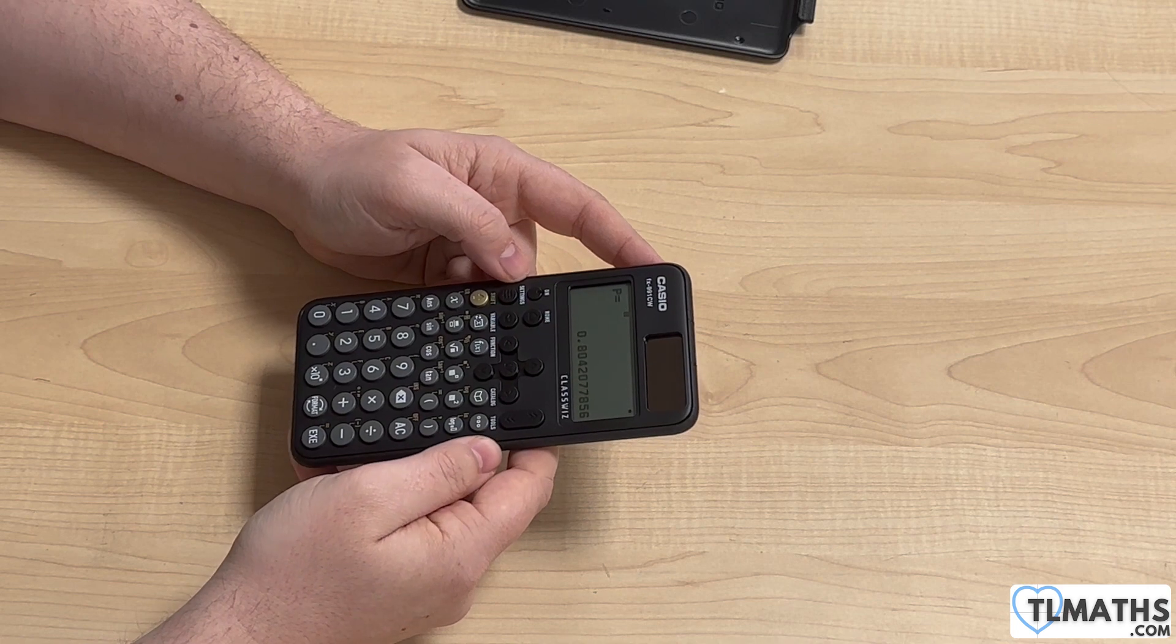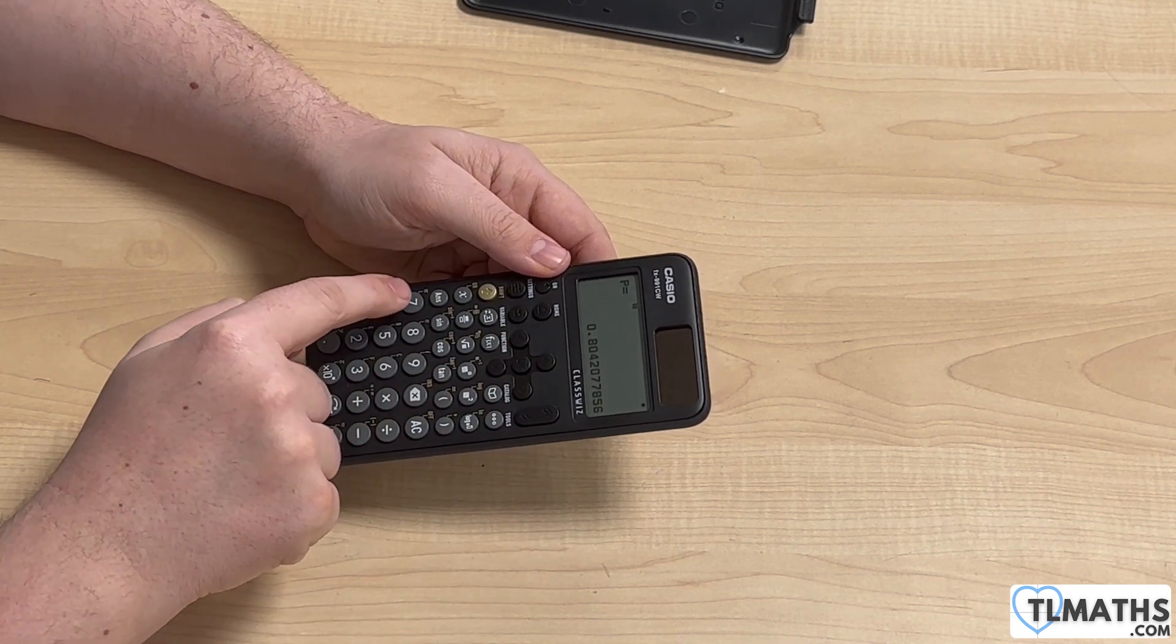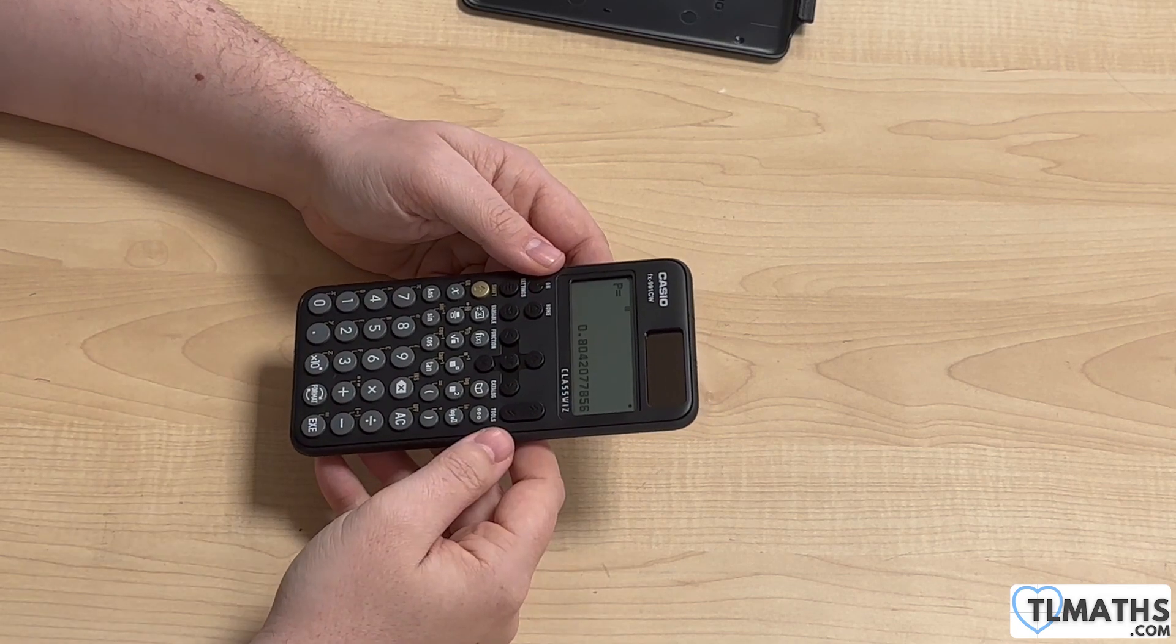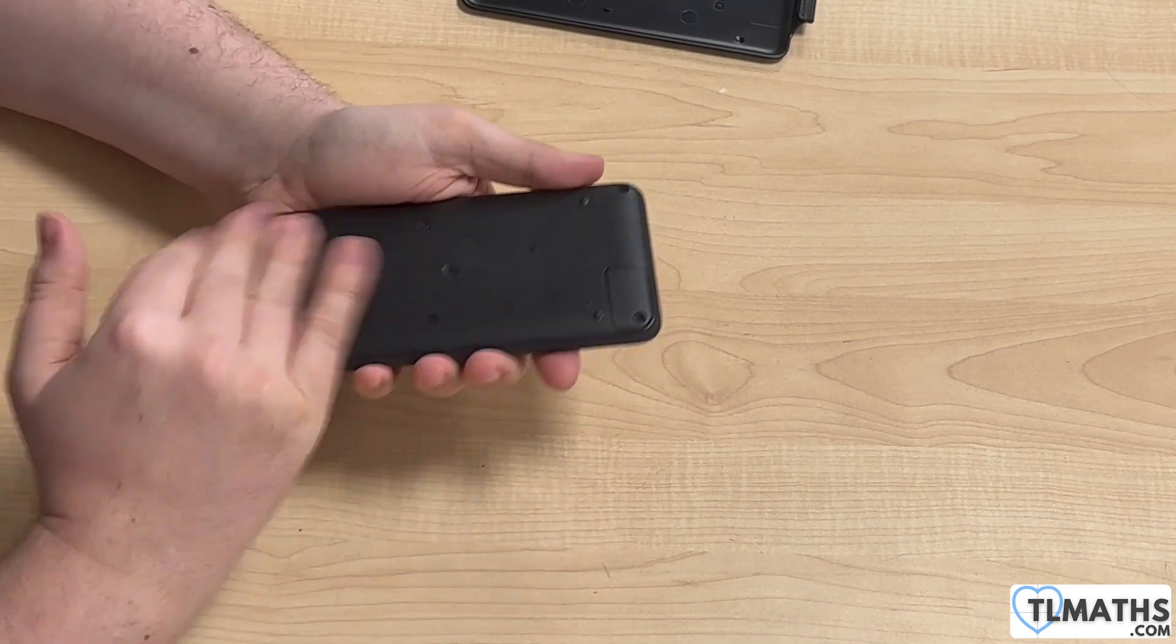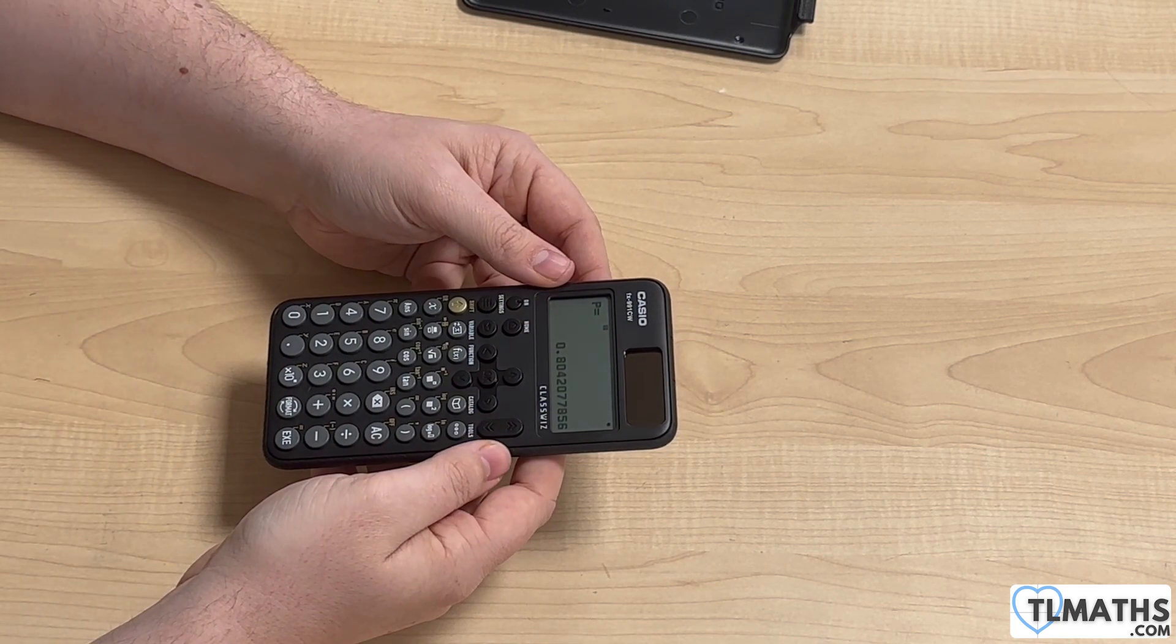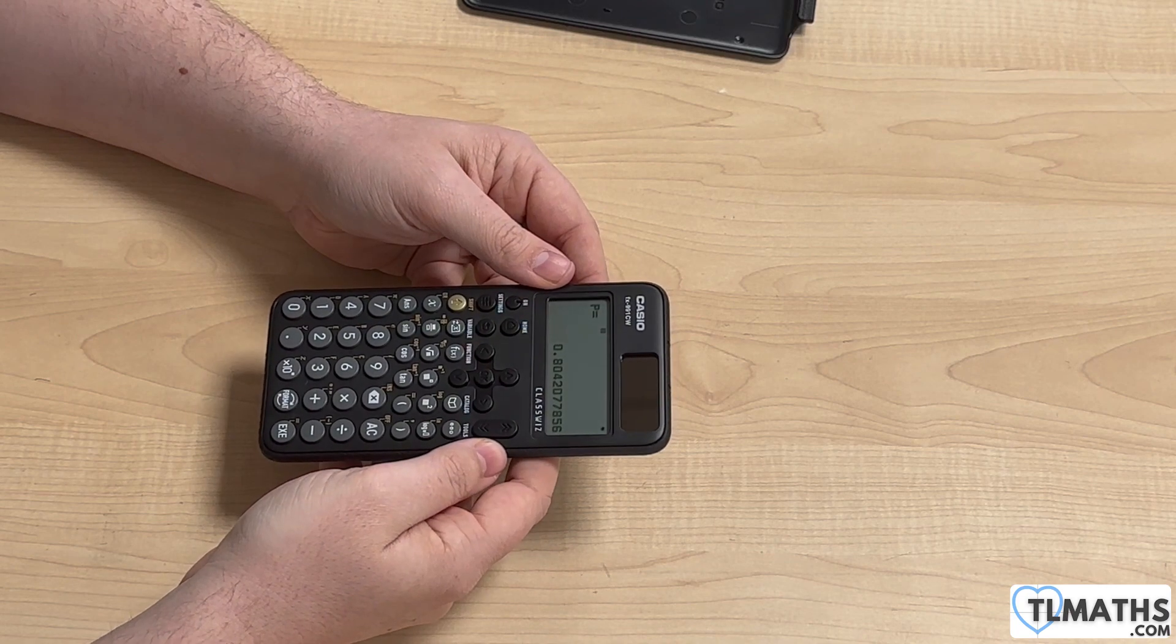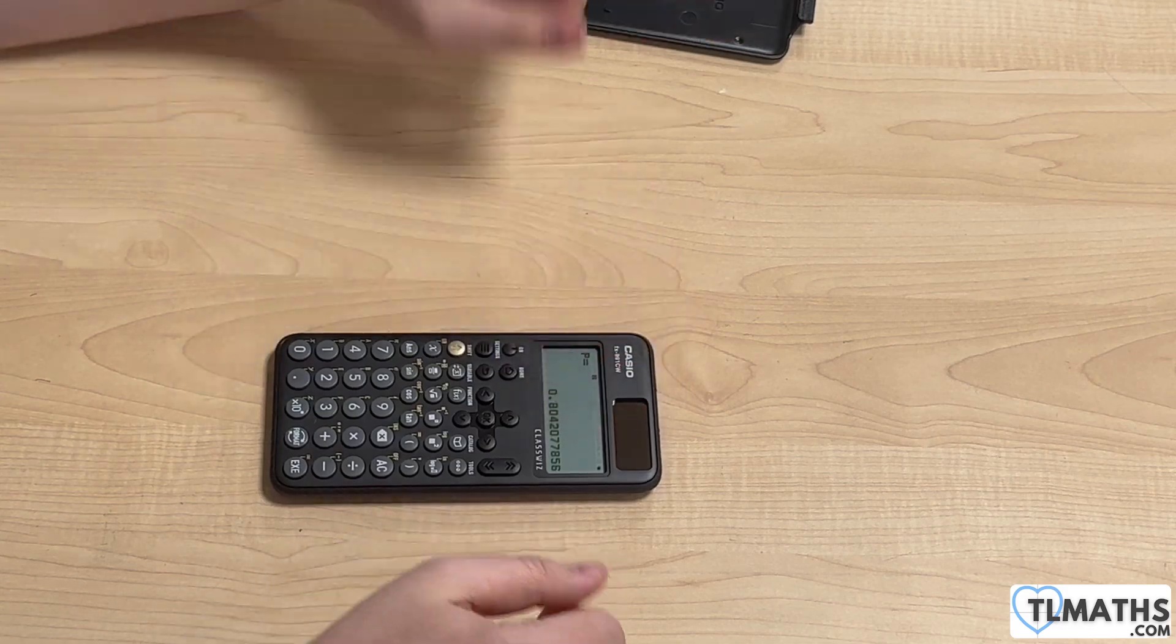It's just buttons are in a slightly odd place. First instinct is I'm not sure why the pi is above the 7, but again we'll probably get used to it. Yeah, new calculator. So hopefully I'll try and use this as much as possible. This is the FX991CW, new Casio ClassWiz.